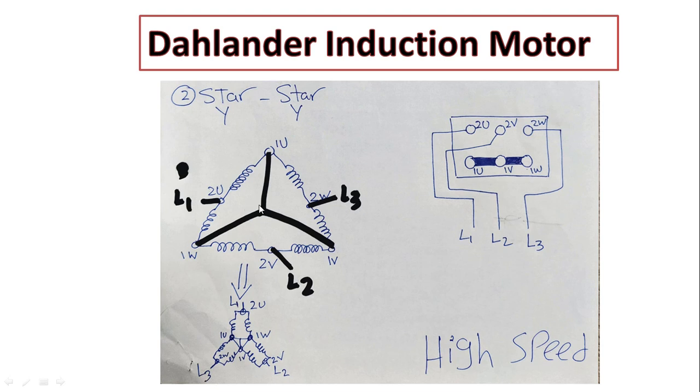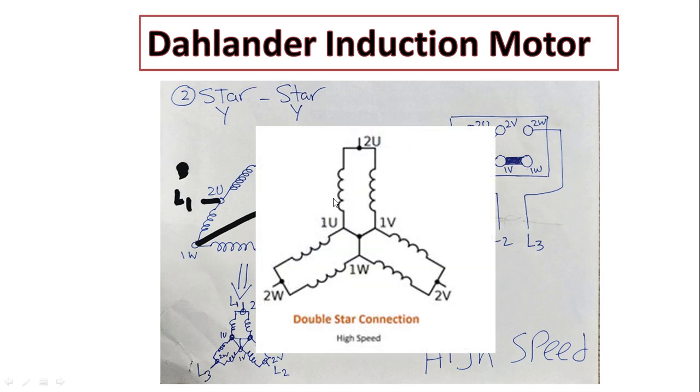Also we will connect 1U, 1V, 1W together as one point. So as you can see, inside the junction box we will connect L1, L2, L3 to 2U, 2V, 2W, and we will connect 1U, 1V, 1W together. At this time we will get this shape. It's more obvious here - we have two parallel windings in a star shape, so it's a double star connection.